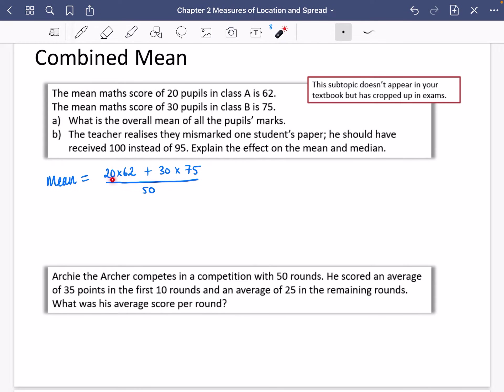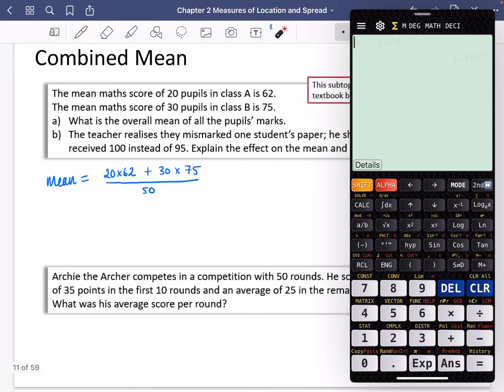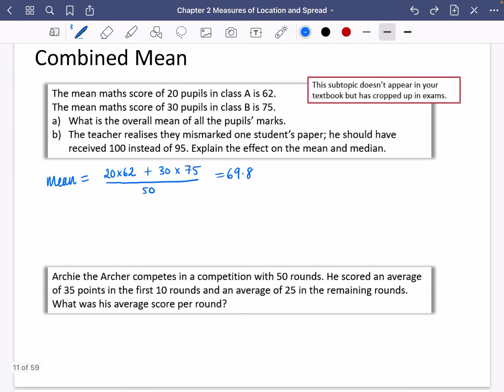We're saying, we're trying to find out what's the total of their marks from that class. So we multiply them and the total of their marks from that class. So we multiply them. So let's just figure out what this is going to be. We're going to have 20 multiplied by 62 plus 30 multiplied by 75, all divided by 50. So the average is 69.8 marks. Or I should say not marks, I should say score. 69.8 for the score in maths.